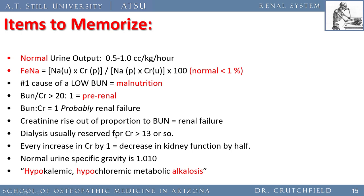If a patient has a creatinine of 1.0 today and 2.0 tomorrow, they've effectively lost half their kidney function. At creatinine 3, they're down to a quarter, and so on. Normal urine specific gravity is 1010 — memorize that. Also memorize that hypokalemic, hypochloremic metabolic alkalosis goes with hypo — the low values — while hypernatremic, hyperchloremic metabolic acidosis goes with high values.